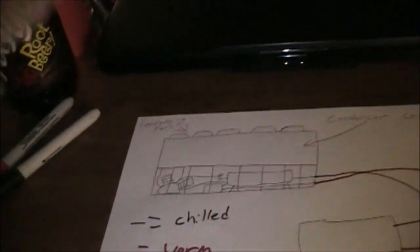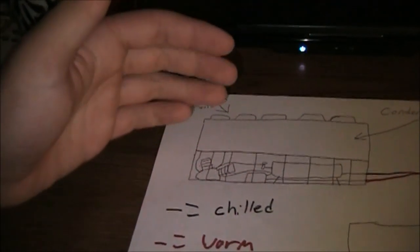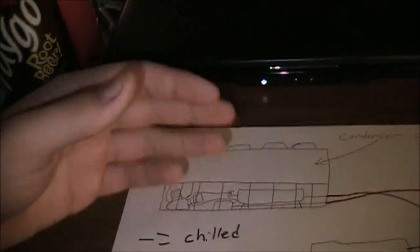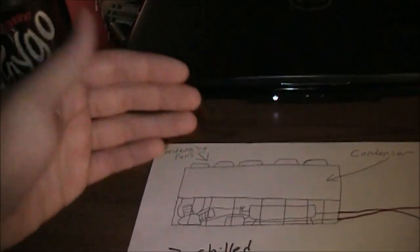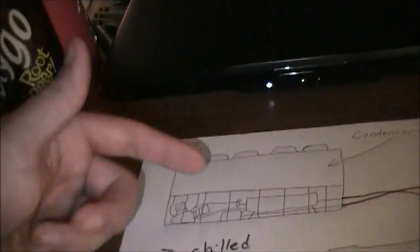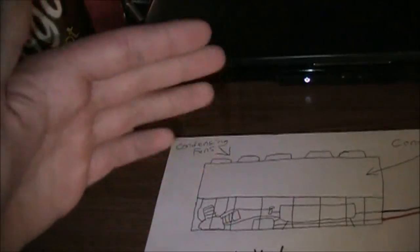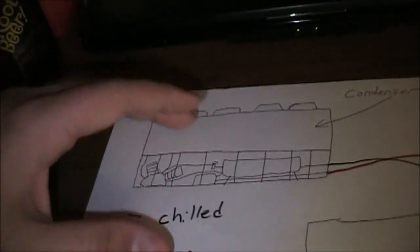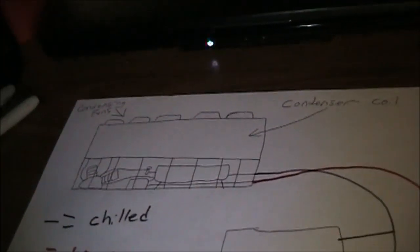So these are out in the heat and the condenser coil is out in the heat whereas those liquid cooled chillers have nice even on 110 degree days they have nice 77, 80 degree water going into the condenser. Whereas these have the full 110 degree heat going through the condenser coil. That's why water cooled chillers use less energy.